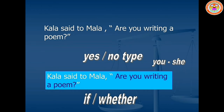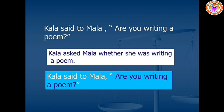Number three: Kala said to Mala, 'Are you writing a poem?' This is a yes or no type of question, so 'said to' should be changed into 'asked' and the conjunction word is 'if' or 'whether' — we can use 'whether.' The pronoun 'you' refers to Mala, so 'you' should be changed as 'she.' 'Are writing' is present continuous tense and should be changed to 'was writing.' Answer: Kala asked Mala whether she was writing a poem.